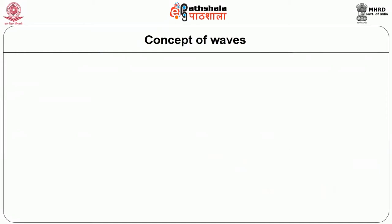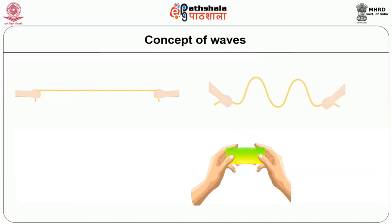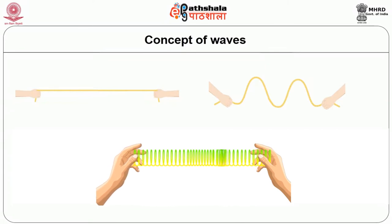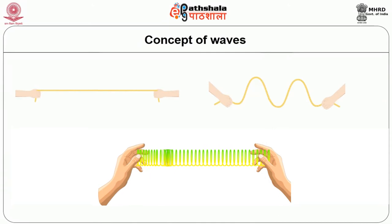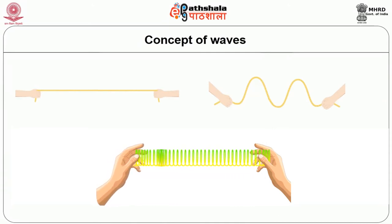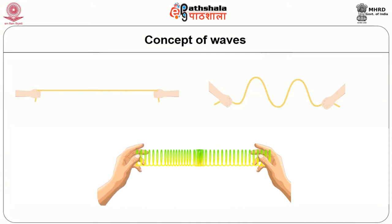This can be understood better by doing an experiment. Take a piece of rope, hold on either ends, stretch and shake it. You will be able to see wave formation in the transverse. Take a spring, hold on both ends and pull it. You will be able to see longitudinal wave formation. Now I believe you would have understood the difference between the two.